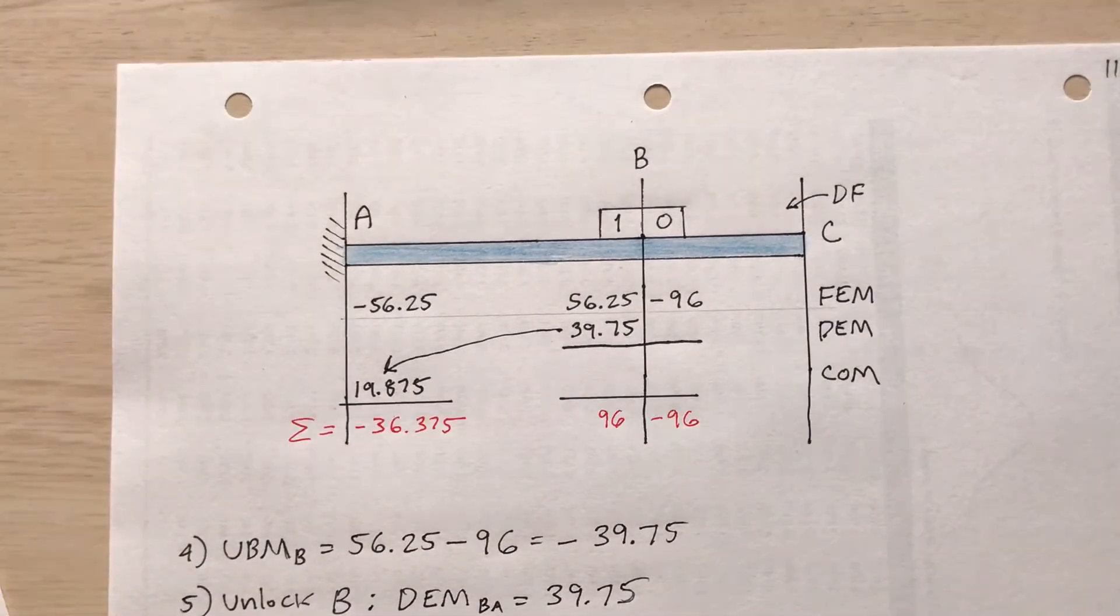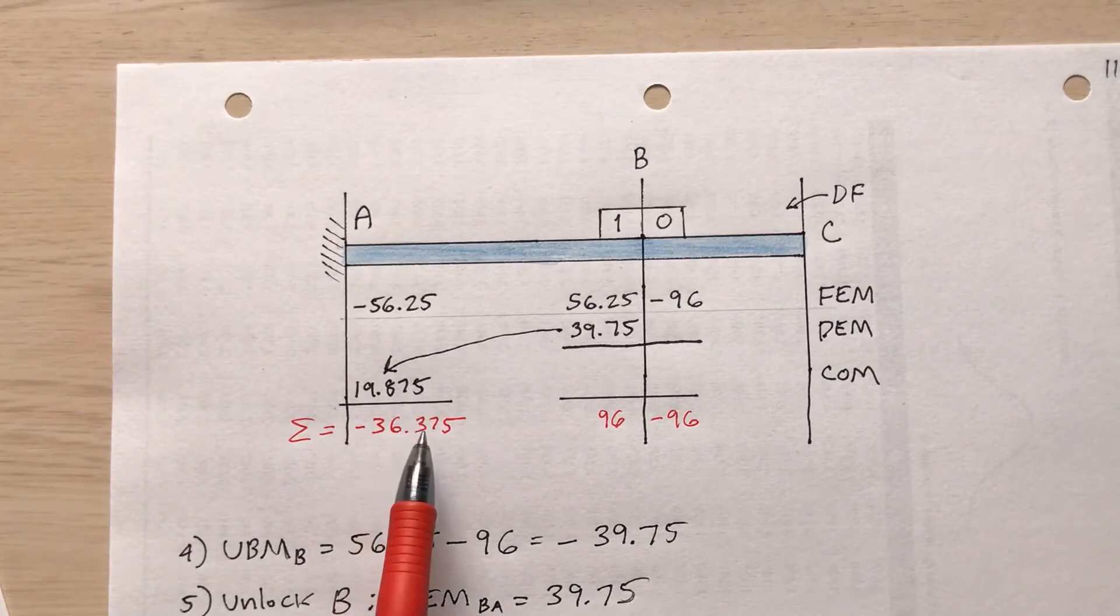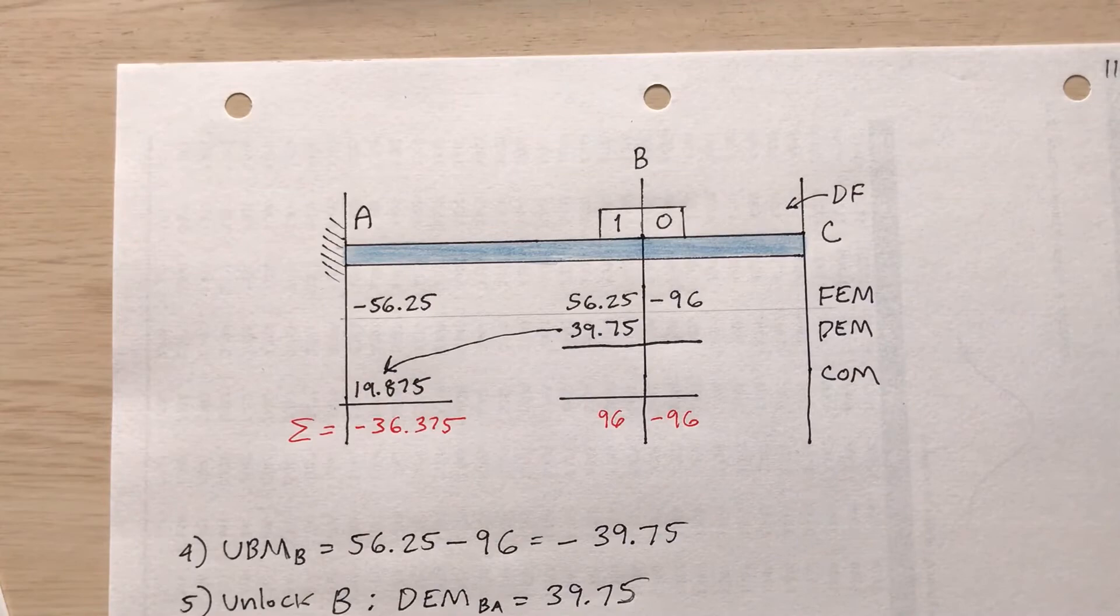I like this. The sum negative 36.375, negative 96. What good does this do? What do I do with these numbers? The next drawing I'm going to take my beam and I'm going to analyze segment AB and BC separately, and in doing so I can find the unknown reactions.